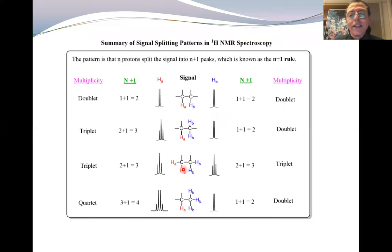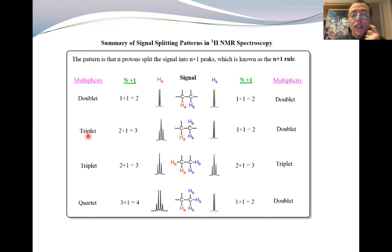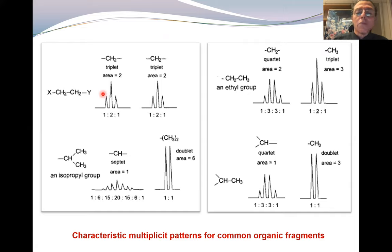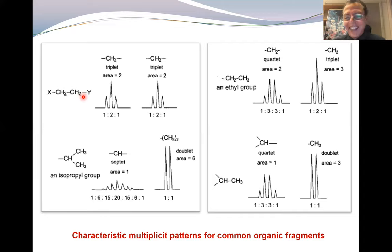Let us take another example. When you see a triplet and a quartet according to the N+1 rule, immediately write that it is an ethyl group (CH2CH3). What about if you see a triplet and a triplet? Immediately write CH2-CH2 according to the N+1 rule. So you can immediately identify part of the structure in this way.